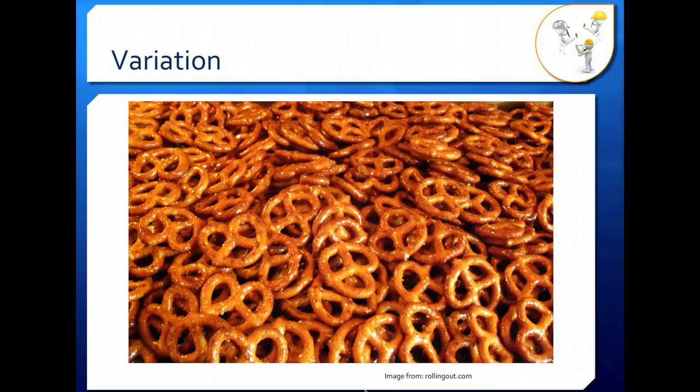The variations you see can be large and easy to notice—for example, color differences between these pretzels, where one is very burned and one is very light. Or they may be small, like having one more grain of salt on one pretzel than another. The limitations of your measuring devices, such as scales or colorimeters, can cause two items to appear exactly the same when in reality, with a more precise instrument, they would show up as different.